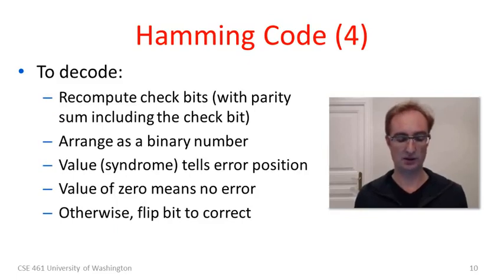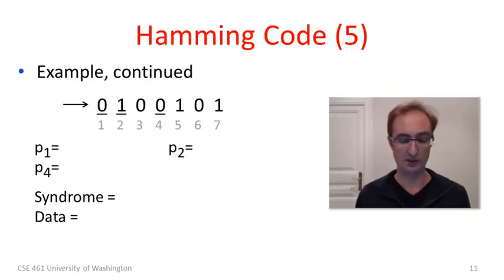What we do is we proceed by recomputing all of these check bits using the same parity sums, now including the check bit parity value itself because there's a value in there. We then take those check bits and arrange them as a binary number. And look at the value. This value is called the syndrome. This value will tell us the position of an error. If it's 0, there's no error. If it's another number like 3 for instance, then the bit in position 3 is wrong and we should flip it to correct the value. Wow, it's pretty cool that this works out. This was all worked out by Richard Hamming. And you can read about it in his paper that I mentioned in a previous segment. So we better try and work through an example.